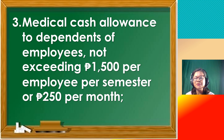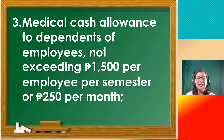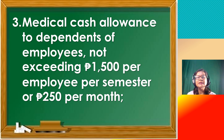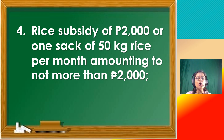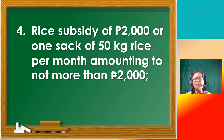In a year we have two semesters, so 1,500 pesos times 2 is 3,000. Or the other computation is 250 pesos per month times 12 months — the same answer of 3,000 pesos. Number 4 is rice subsidy of 2,000 pesos or 1 sack of 50-kilogram rice per month amounting to not more than 2,000 pesos.